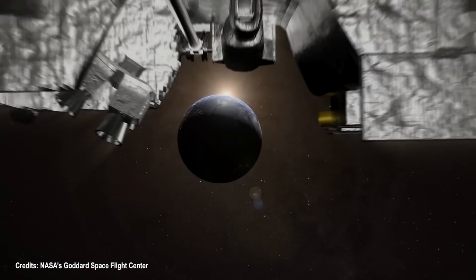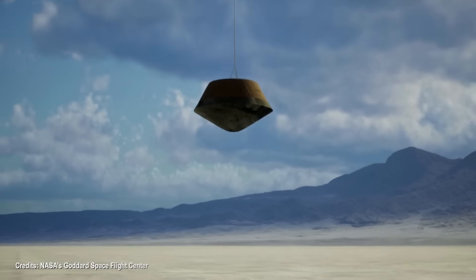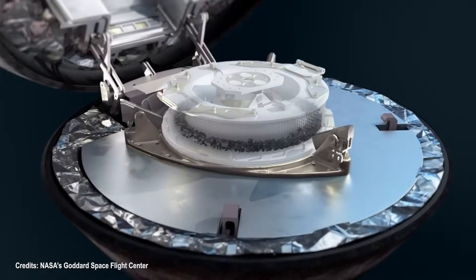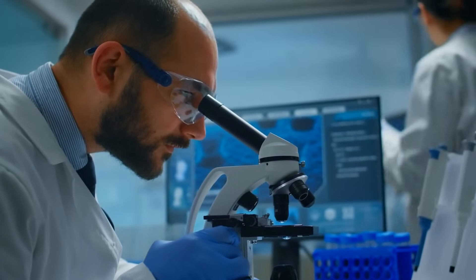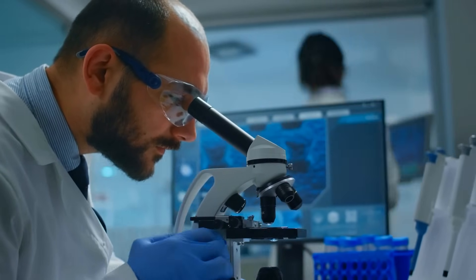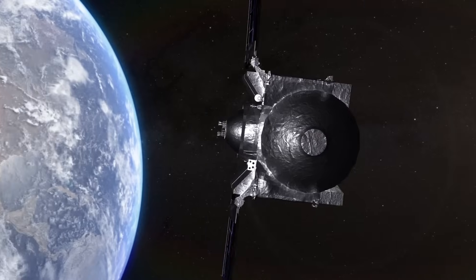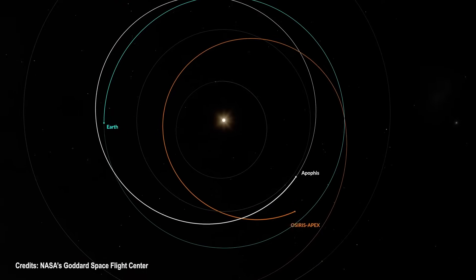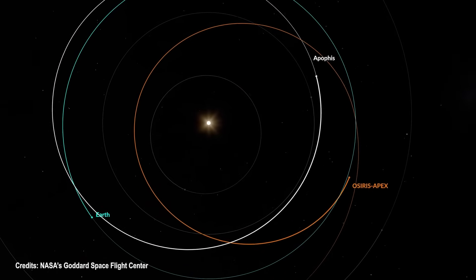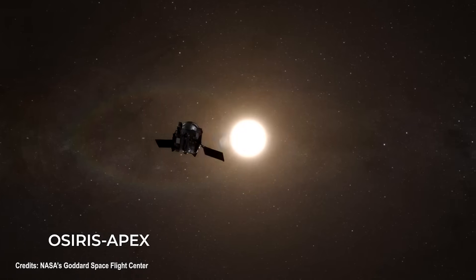Just a few months ago, OSIRIS-REx completed its final task for this mission by releasing its sample capsule containing pieces of the Bennu asteroid. These samples are currently being analyzed in Earth laboratories and are expected to provide unprecedented insights into the formation of the solar system. Interestingly, shortly before delivery, the spacecraft altered its course by firing its engines, redirecting towards Apophis and earning a new name, OSIRIS-APEX.